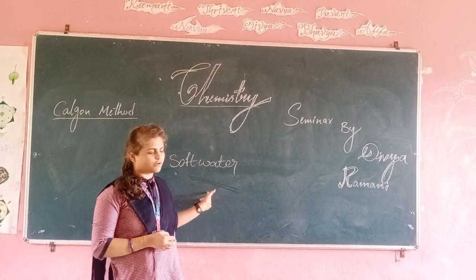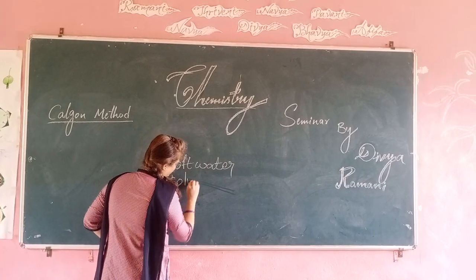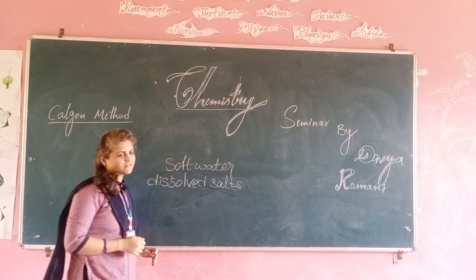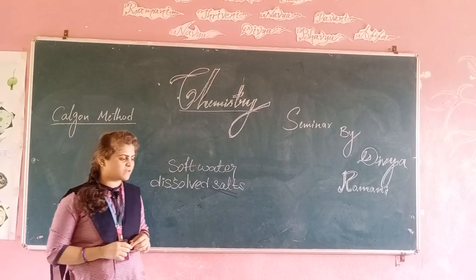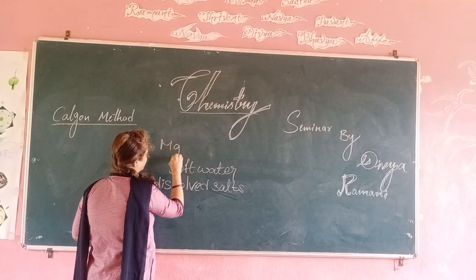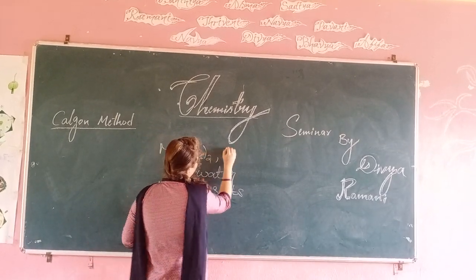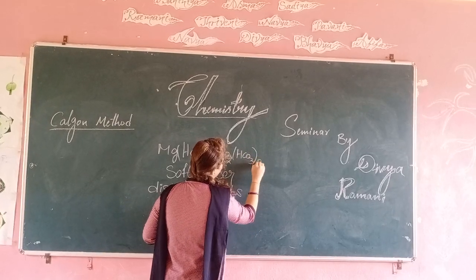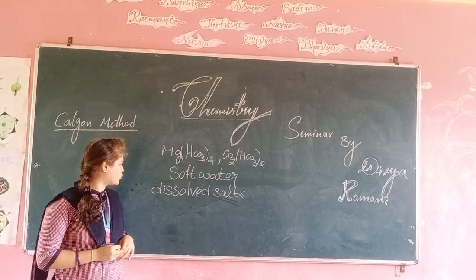The hardness of water is due to dissolved salts, like calcium, magnesium, and iron, present as bicarbonates, chlorides, and sulfates — such as MgHCO3)2 and Ca(HCO3)2. These dissolved salts are present in hard water.